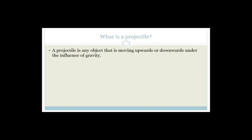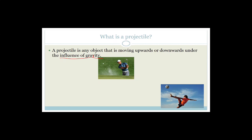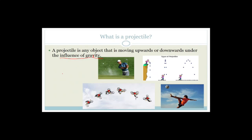So we've said that a projectile is any object that is moving either upwards or downwards under the influence of gravity — in other words, it doesn't have a jet engine helping it fly. For example, a golf ball, once it has left the golf club, the only force acting on it, if we're ignoring air friction, is the force of gravity. A soccer ball — same thing. And even a motorbike during a jump: even though it has an engine, that engine cannot propel it while it's airborne. So during the jump, the motorbike and rider are all under the force of gravity and therefore together they are a projectile.